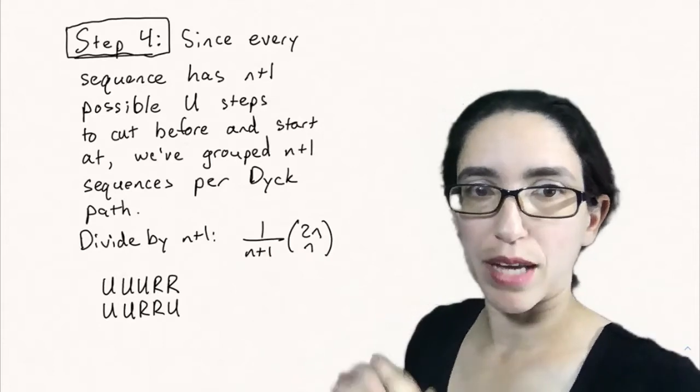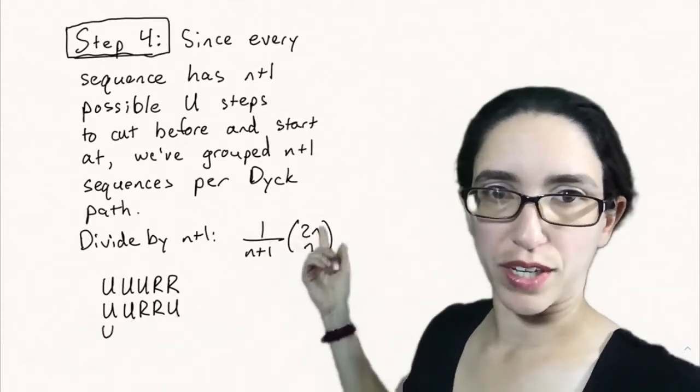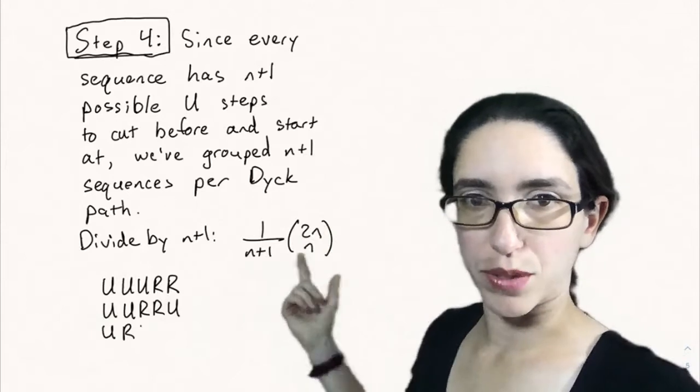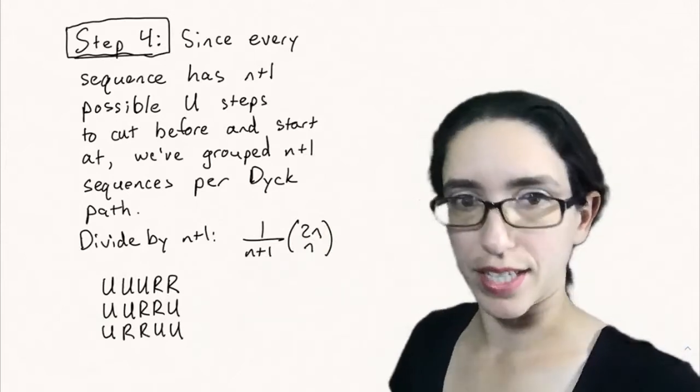Only one of them is going to be a Dyck path. So each group corresponds to one extended Dyck path, and so we have n plus 1 things in each group. That means we can divide 2n choose n by n plus 1 to get the number of extended Dyck paths.